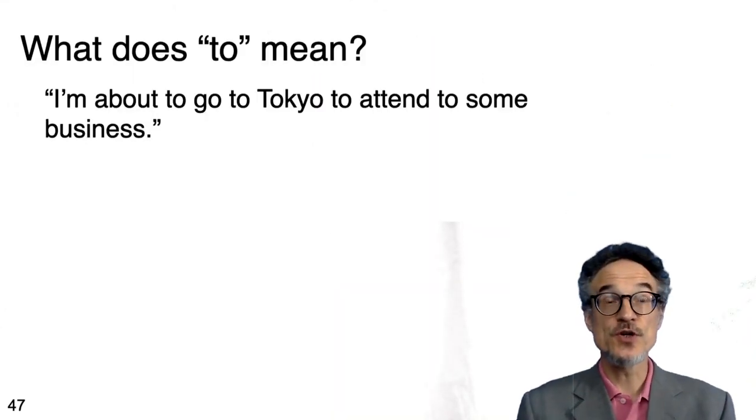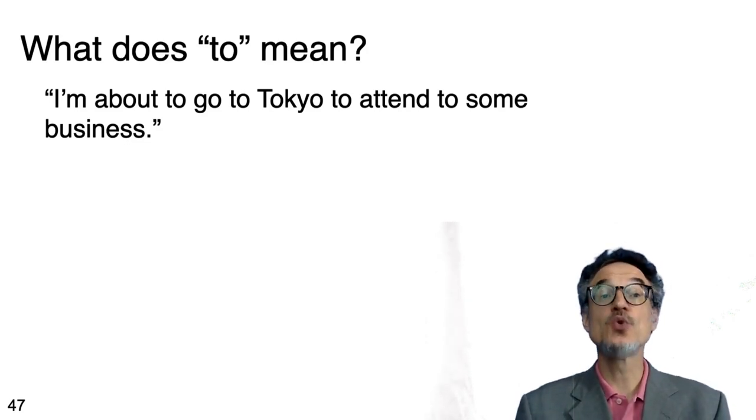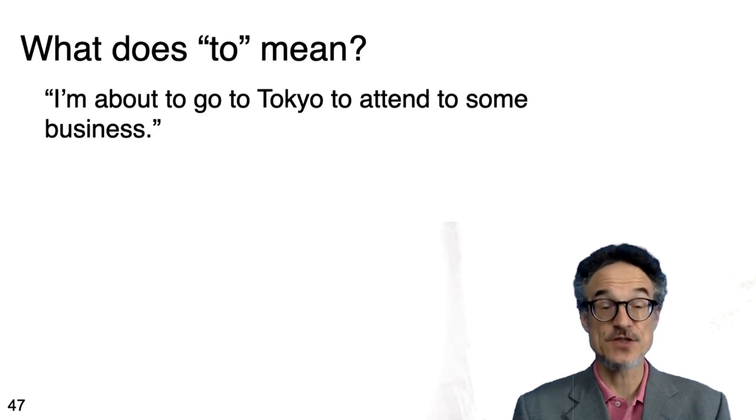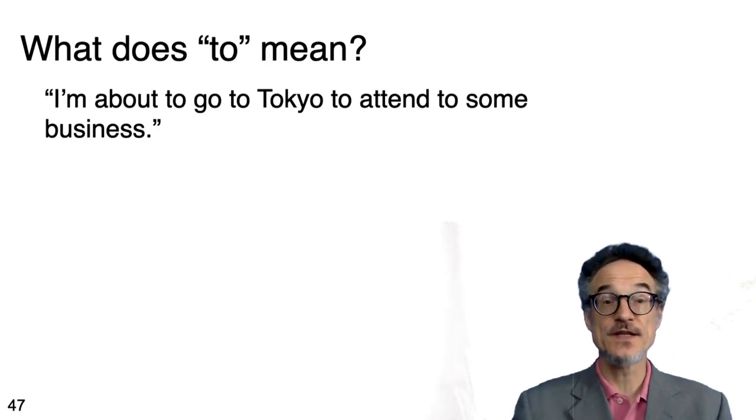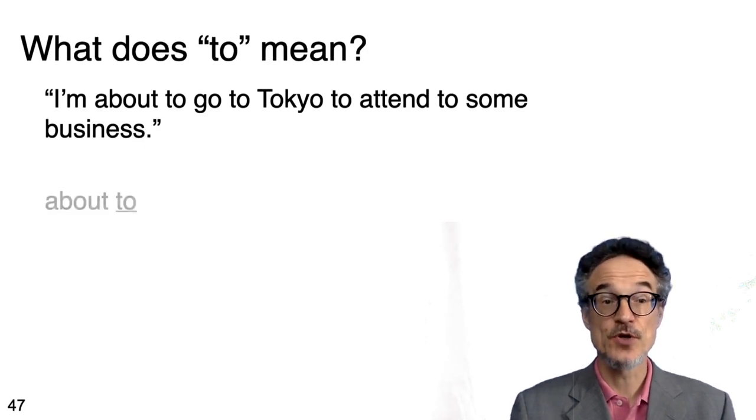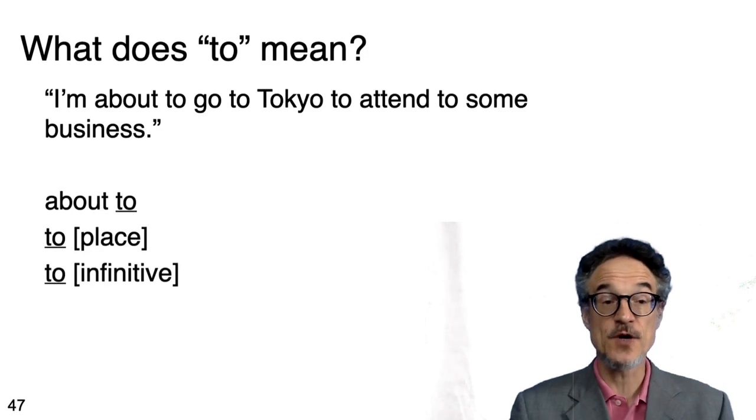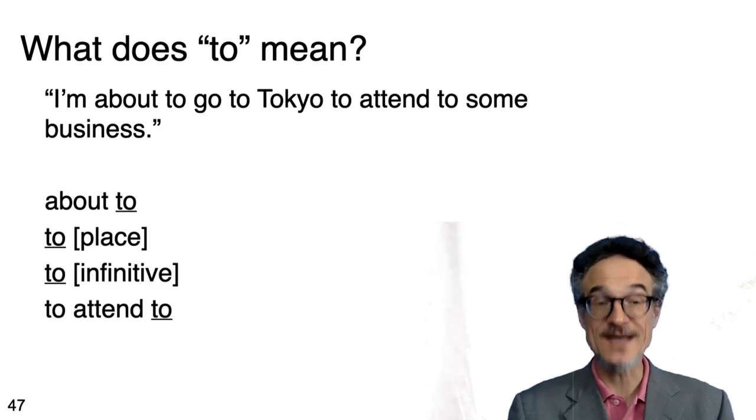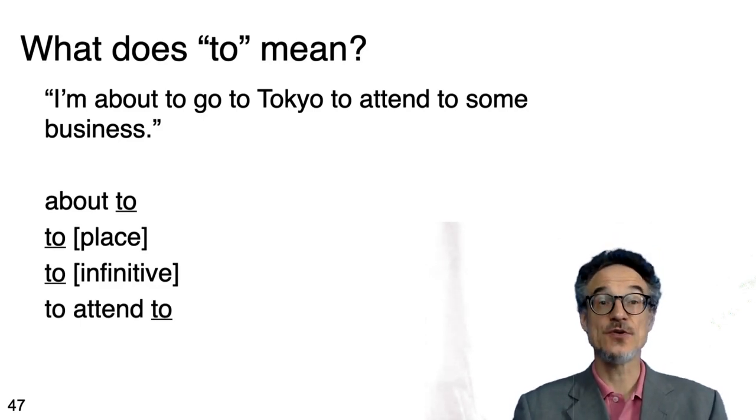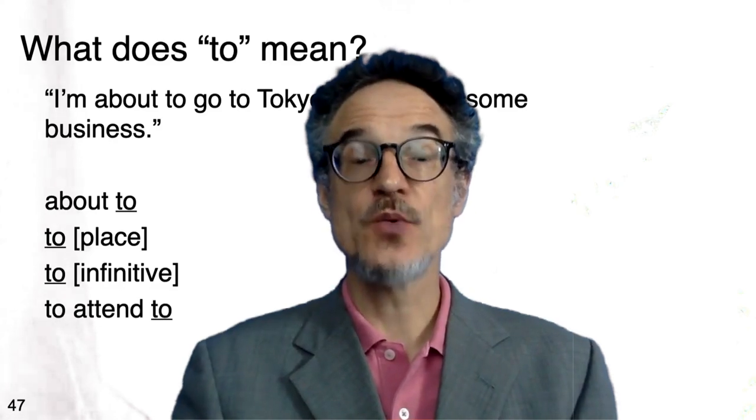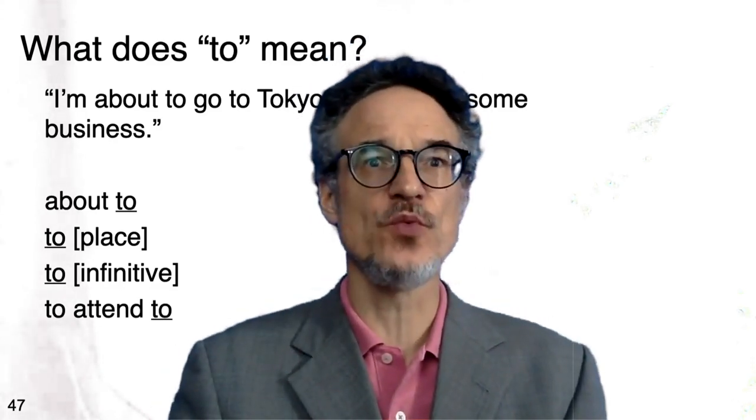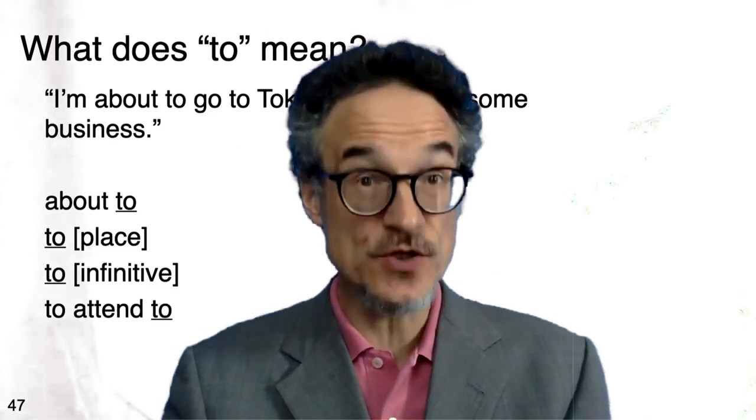Let's look at the word to. What does to mean? I'm about to go to Tokyo to attend to some business. If we look at to in this sentence, we can see different uses. About to, to a place, to plus infinitive, to walk, to dance, to go. And to attend to, attend to is a different meaning to attend. So we can see that to is, it's very difficult to say what the word to means. But we can say it's a very useful word.